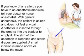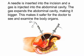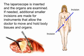A small incision is made above or below the navel. A needle is inserted into the incision and a gas is injected into the abdominal cavity. The gas expands the abdominal cavity, making it bigger, which makes it safer for the doctor to see and examine the body organs. The laparoscope is then inserted and the organs are examined. If needed, additional smaller incisions are made for instruments that allow the doctor to move and hold body tissues and organs.